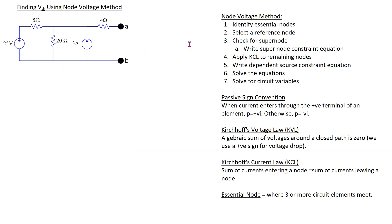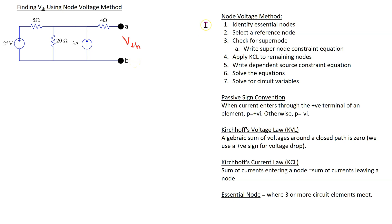Let's see how the node voltage method can be used to find the Thevenin voltage. The first thing is the 5 ohm load resistor has been removed, and now we are left with this circuit, and our goal is to find the open circuit voltage between these terminals. This open circuit voltage is the voltage VTH that we desire to find. We can use any circuit analysis technique to find VTH. First, let's use the node voltage method.